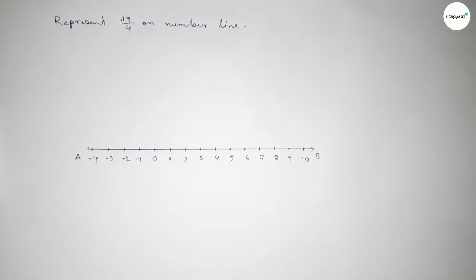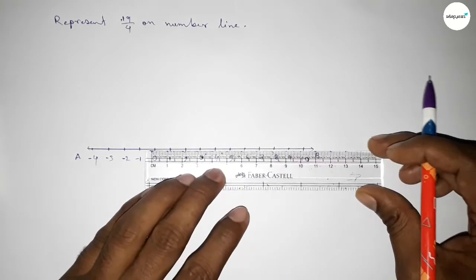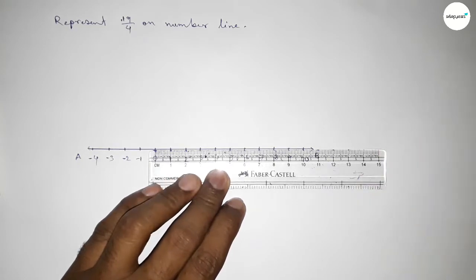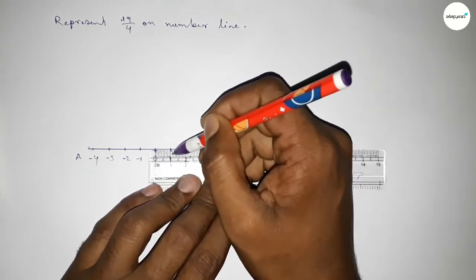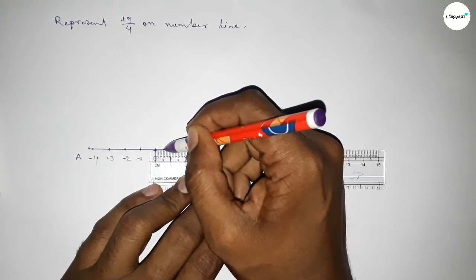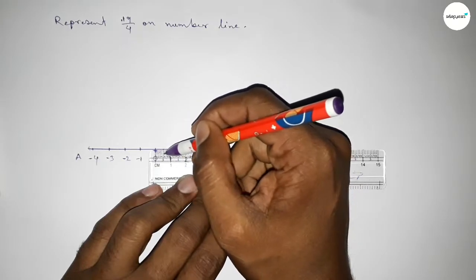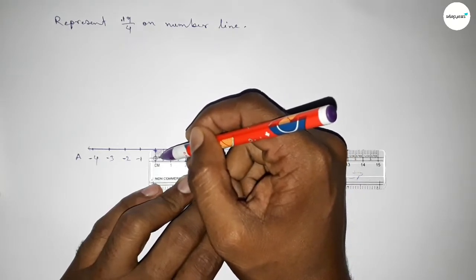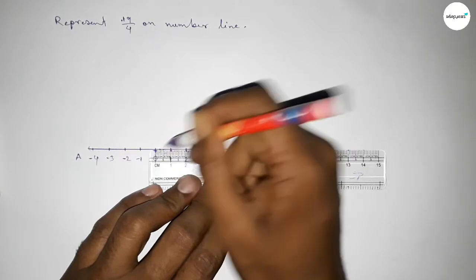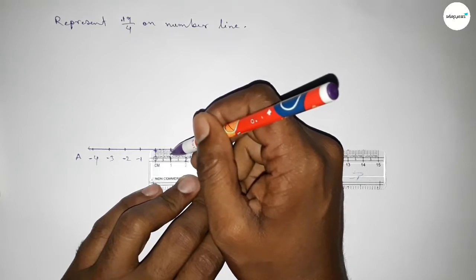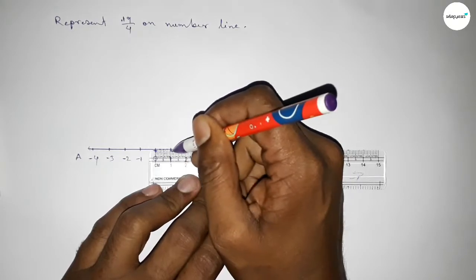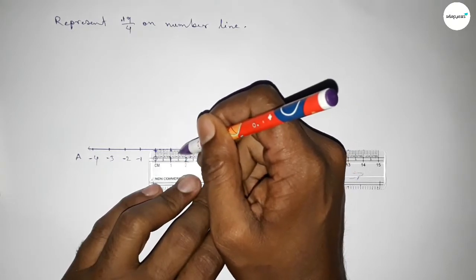Now we have to divide the distance between any two numbers into four parts. First divide the distance into two parts, then divide each part into two again to get four parts. So first dividing the distance between 0 to 1: taking the half between 0 to 1, then the half between 0 to 0.5 — this is approximately 0.25 — and the half between 0.5 to 1 — this is approximately 0.75. Now similarly dividing the distance between 1 to 2, taking the half first.